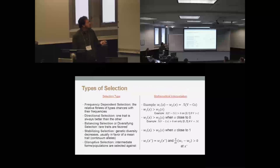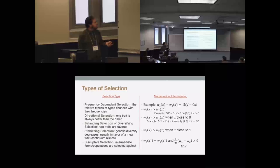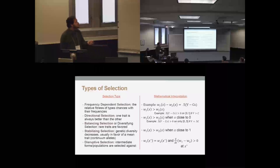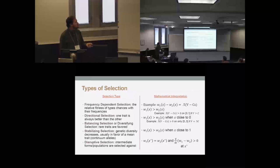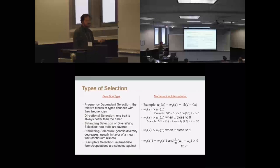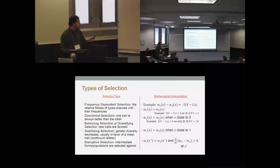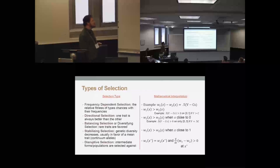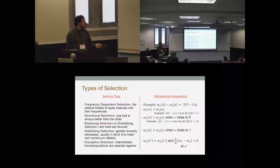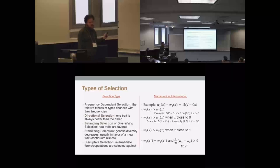There are other types of selection that might appear. The hawk-dove model is frequency-dependent — the term V minus CX depends on frequency. Selection may be directional, meaning one trait is strictly better than the other (as when V was bigger than C). Balancing selection favors rare traits, providing some means of supporting novel invasions. Stabilizing selection reduces genetic diversity. Disruptive selection selects against intermediate types of forms or populations.